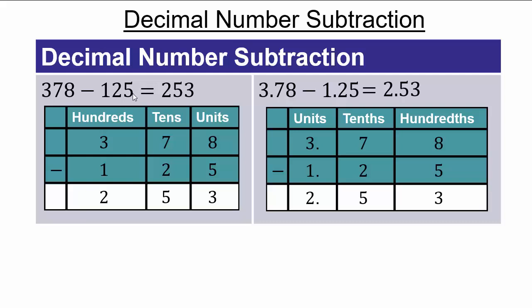The only difference was that the decimal point always sits between the units and tenths place. In the decimal number system, you must have a decimal point between the units and tenths place.